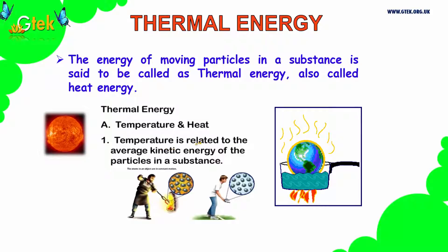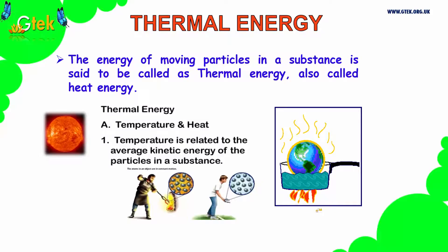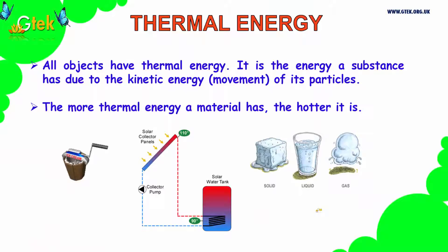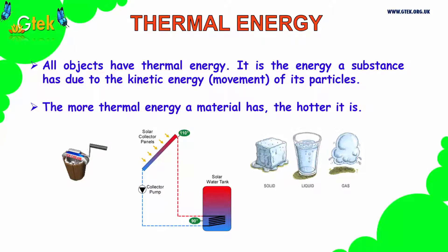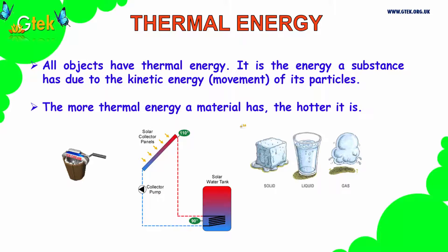Temperature is related to the average kinetic energy of the particles in a substance. You can find some examples of temperature and heat here. All objects have thermal energy. Thermal energy is the energy of a substance due to the kinetic energy of its particles. The more thermal energy a material has, the hotter it will be.